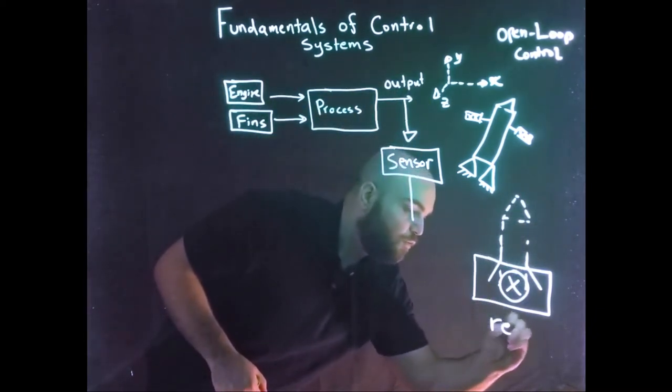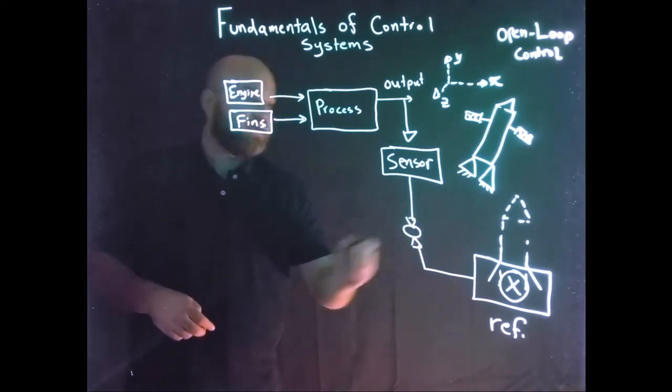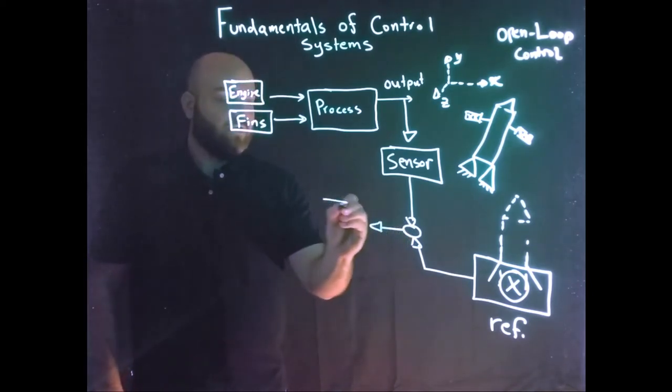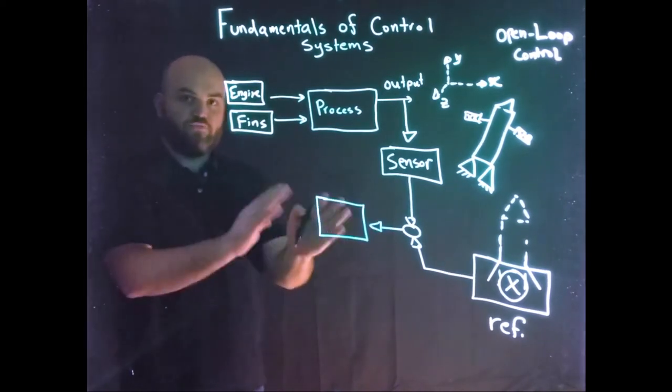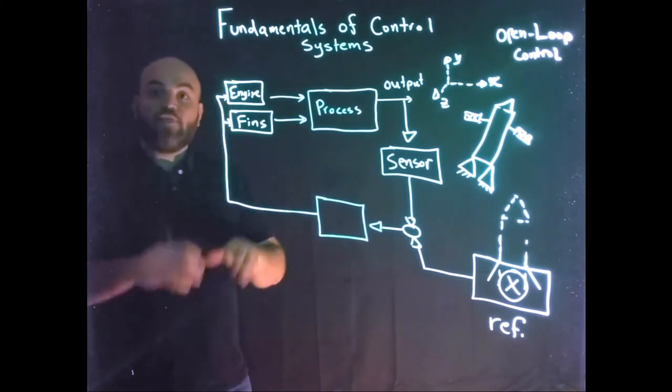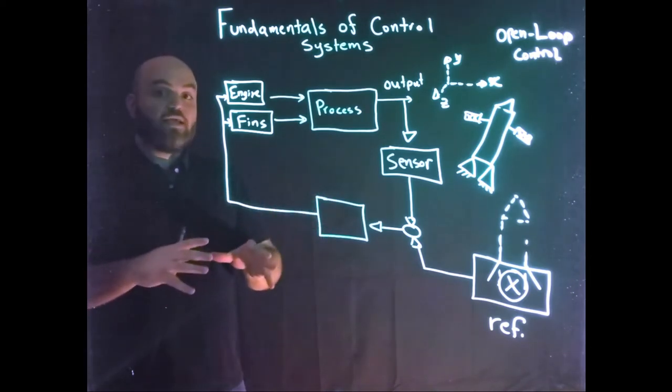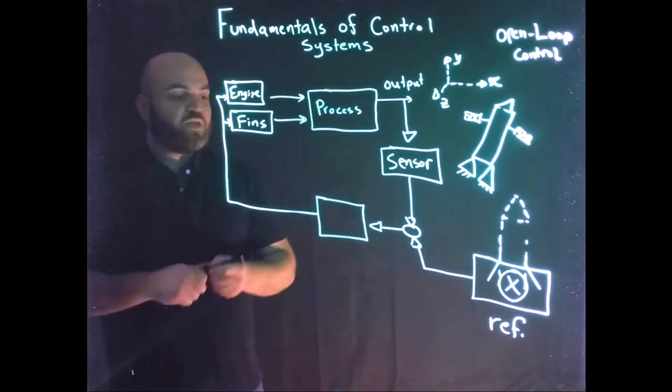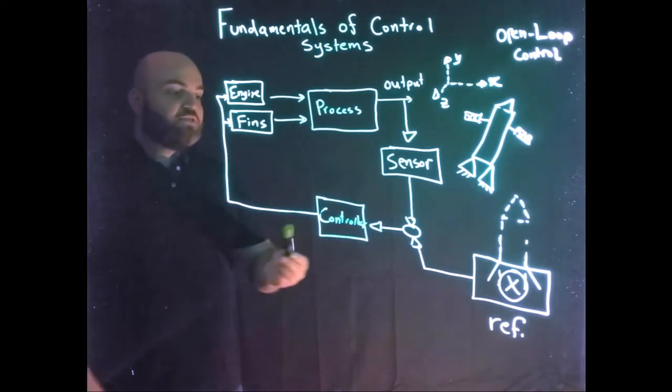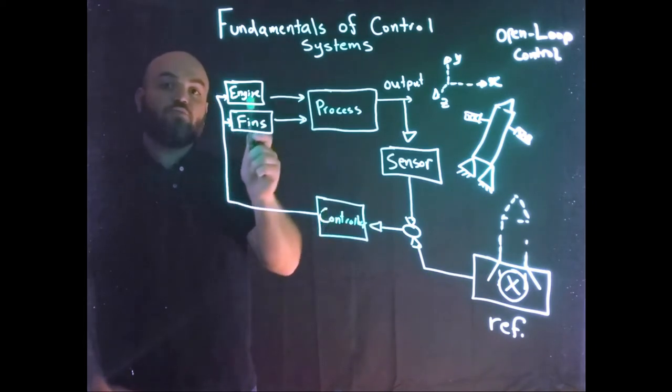So I have a reference for this. If I take this reference and I somehow combine it with whatever I have as a measurement - and we'll talk about what combining is in a second - then I take that signal. I can design this box, which is for now going to be an empty box, that will send a signal to the engine and fins. And then it can tell them, hey, I need you to fire the engine this much, now shut off, or I need you to move the fins like this and then like that, so that I can do a specific task, in this case, landing the rocket vertically. This is the controller.